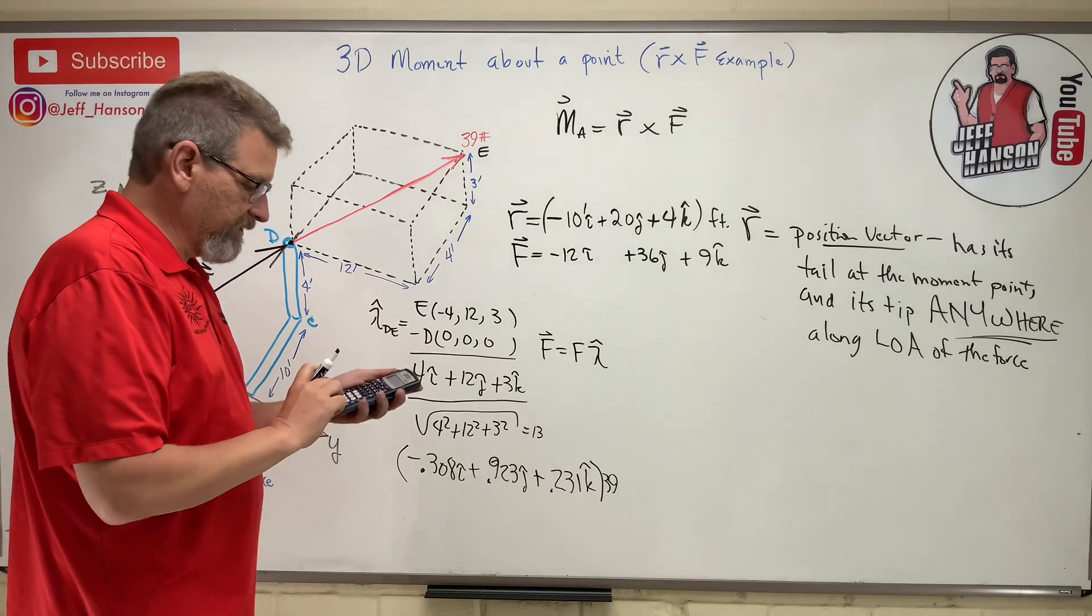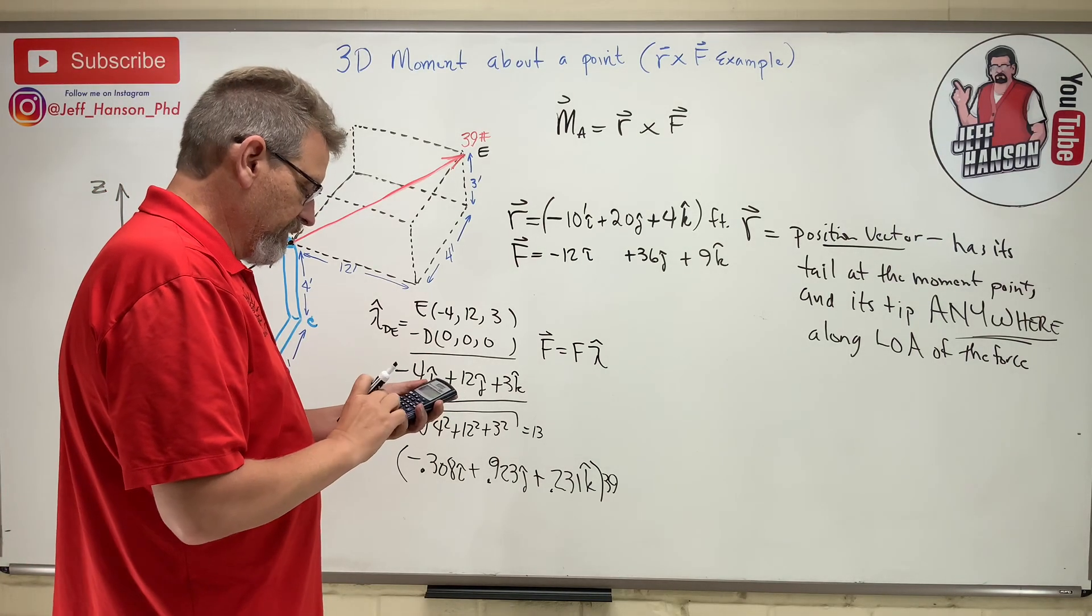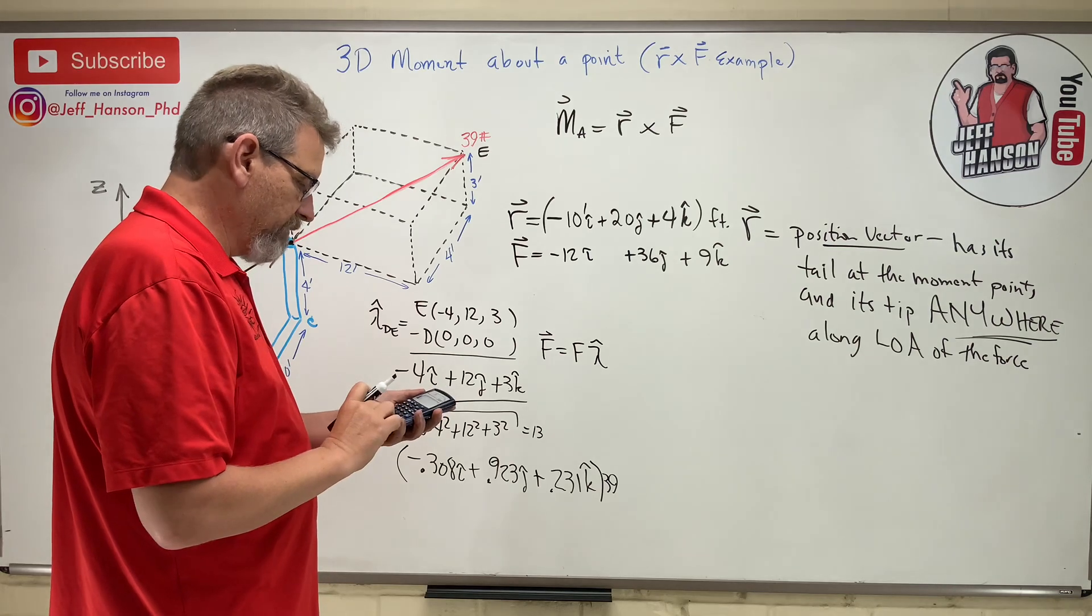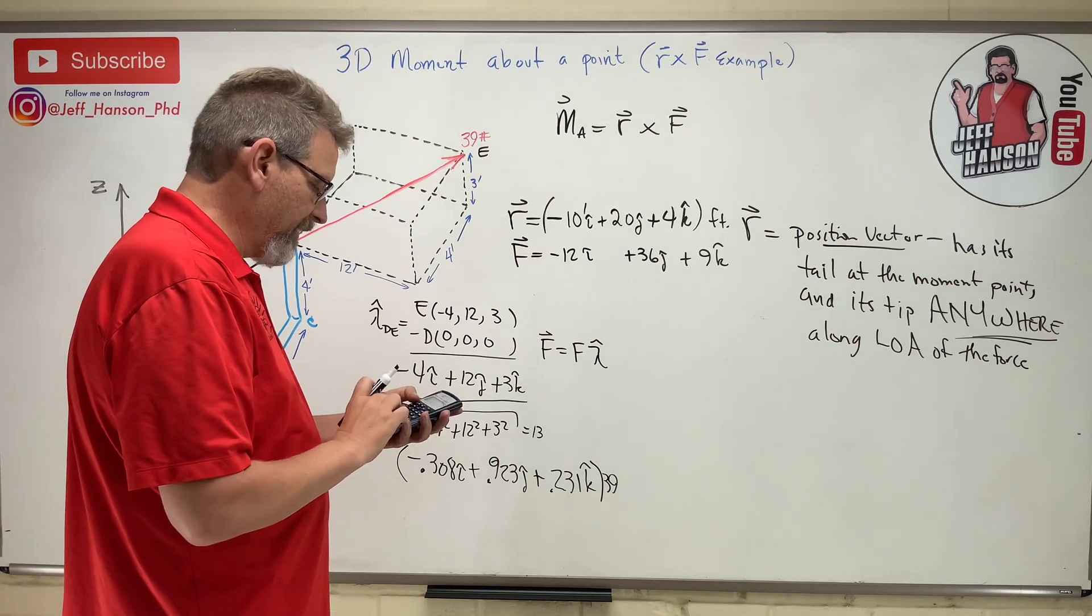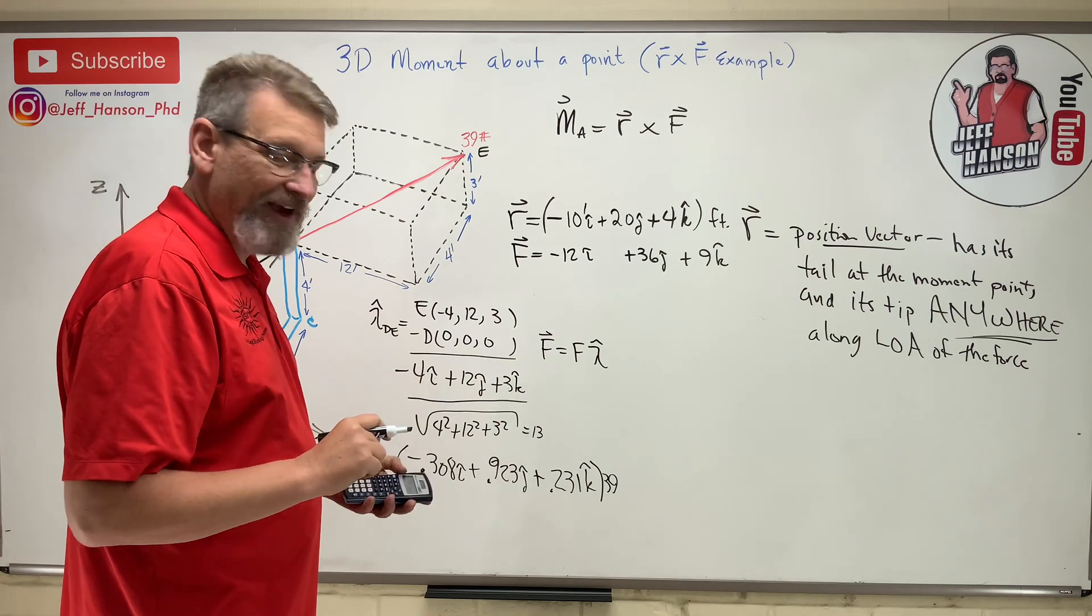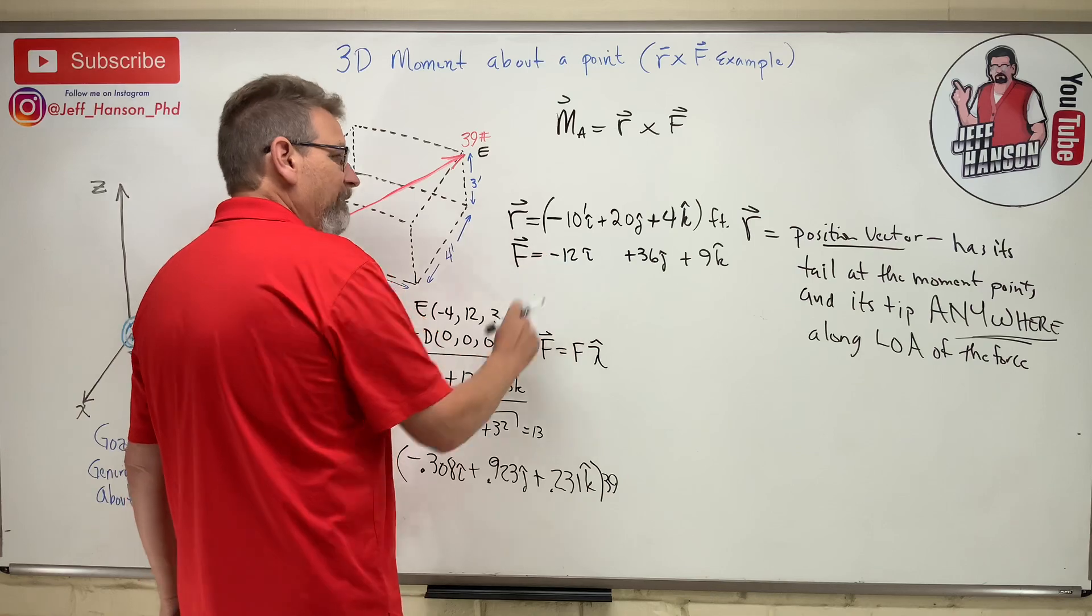And then 0.231 times 39 equals 9, so plus 9 k-hat. And look here, watch this: 12 squared plus 36 squared plus 9 squared equals, and then square root of that, it better equal 39. Boom, it does, 39. That's how big that vector is.